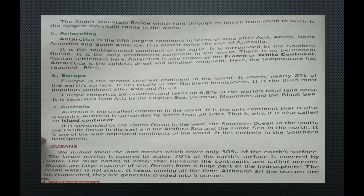Antarctica is the fifth largest continent in terms of area, after Asia, Africa, North America and South America. It is almost twice the size of Australia and is the southernmost continent of the earth. It is surrounded by the Southern Ocean and is the only uninhabited continent in the world, with no permanent human settlement. Antarctica is also known as the frozen or white continent. It is the coldest, driest and windiest continent, with temperatures reaching minus 89 degrees centigrade.